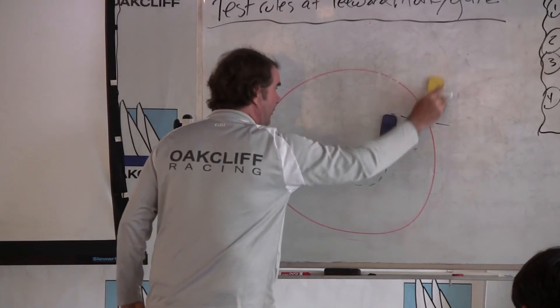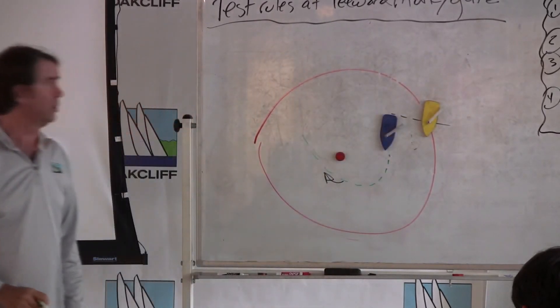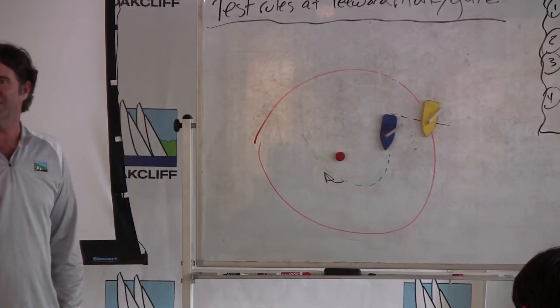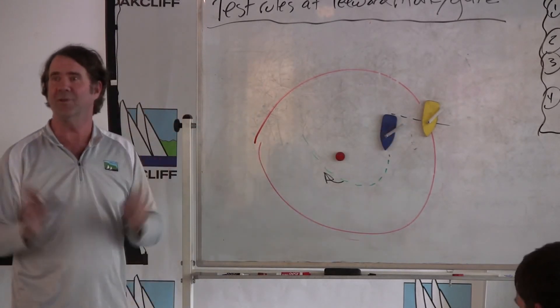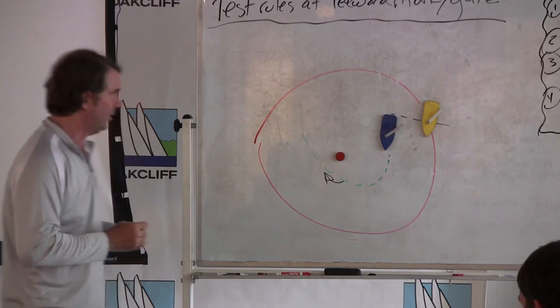And we also see that yellow came in from astern, which under the current rules would turn on rule 17, and would take away her luffing rights for as long as the boats were overlapped. Of course, there is no 17 under the test rules. So there are two differences right here.